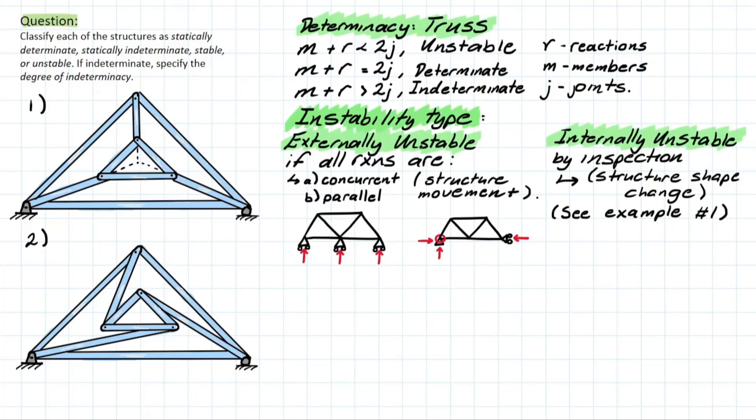External instability is based on the previous rule we covered before. We have concurrently acting reactions or parallel acting reactions. In the parallel case, if we applied a point load P here, similar as before, there's no way for that x reaction to act on these rollers, so the entire structure will translate. Similarly, we have all our reactions within this truss acting at a singular point, meaning that if any external force was applied, you would have rotation about that concurrent point.